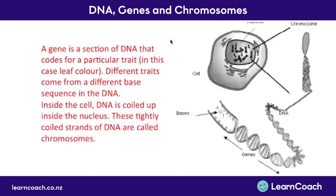So our answer to this question of leaf colour - green or yellow - would be something like this. A gene is a section of DNA that codes for a particular trait, in this case leaf colour. Different traits come from a different base sequence in the DNA. Inside the cell, DNA is coiled up inside the nucleus. These tightly coiled strands of DNA are called chromosomes.